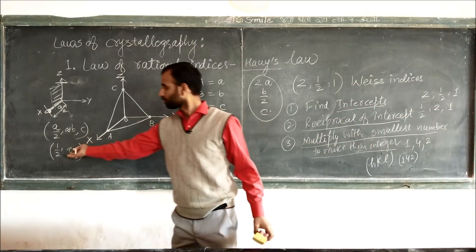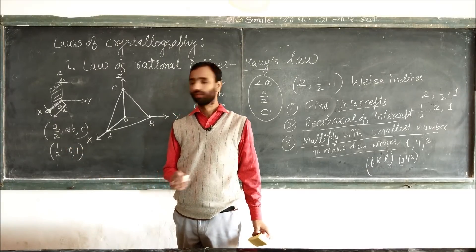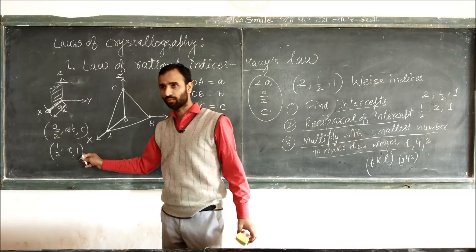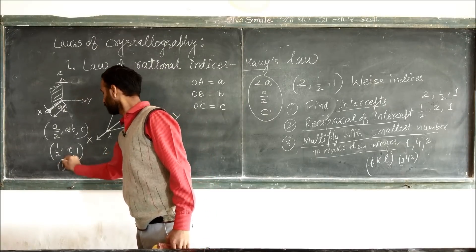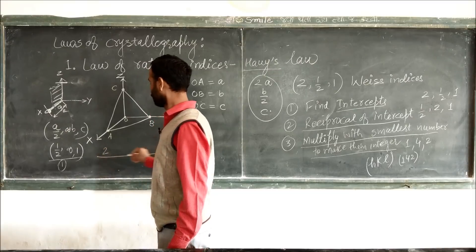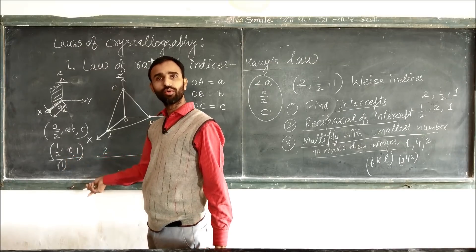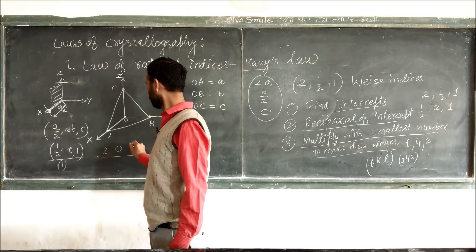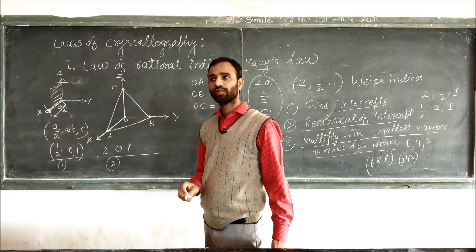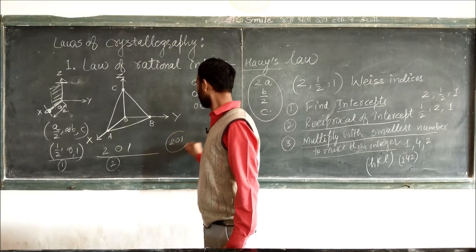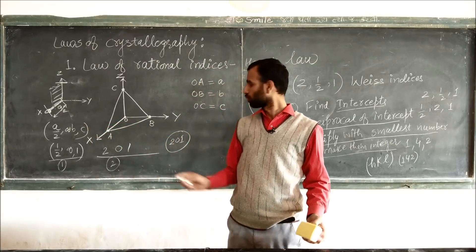What about this plane? The intercepts are a/2, b/2, and c — so Weiss indices are 1/2, 1/2, 1. Reciprocating gives 2, 2, 1. No need to multiply further because they are already integers. So the Miller indices for this particular plane are (2, 0, 1).